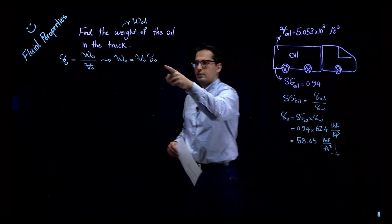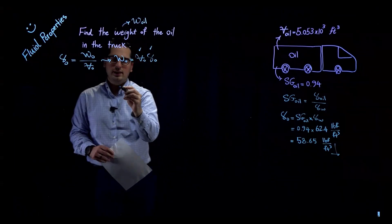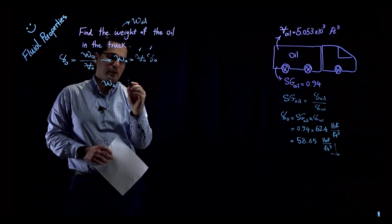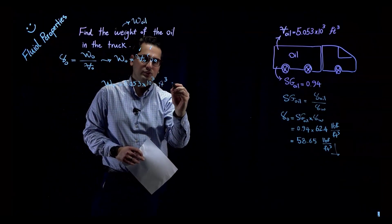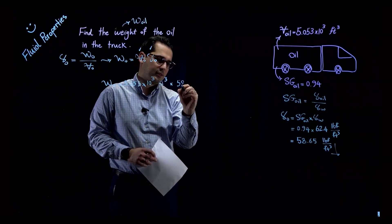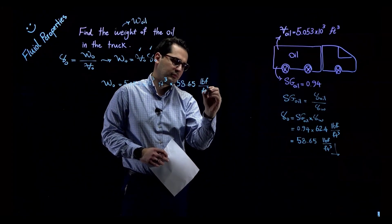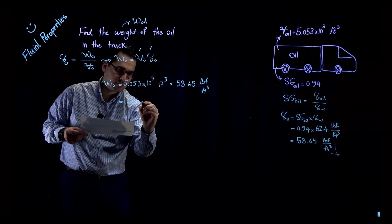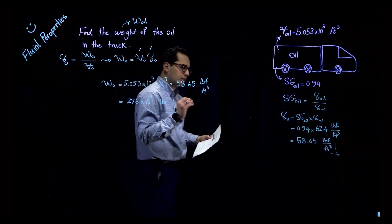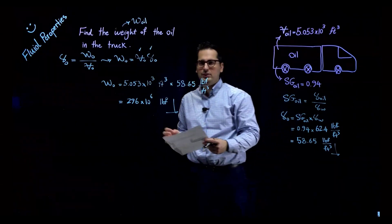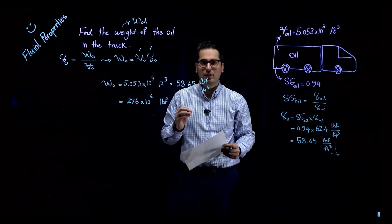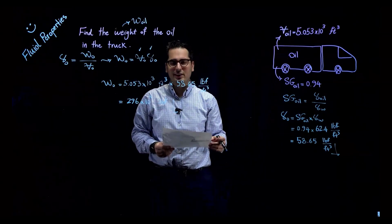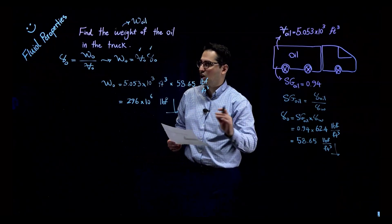Now I have both gamma of oil and the volume of oil. The weight of oil equals the volume times 58.65 lbf/ft³. This gives the final answer for the weight of oil in the truck. You can see how these different fluid properties — density, specific weight, and specific gravity — are useful when calculating different variables for fluids.